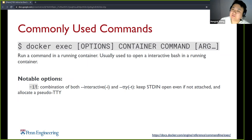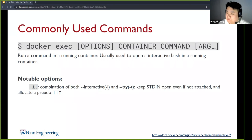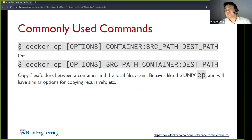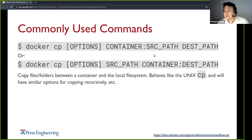Docker exec is for running a command inside an already running container. So if you've already brought up a container with Docker run, you can leave that running and then open another interactive bash session in that already running container — so you'll have two terminals available to you. Docker cp is for copying files between a container and the local system. It behaves like the Unix cp and will have similar options, for example copying recursively. You can copy from inside the container to your host or the other way around, by specifying whether the source path or destination is inside the container name.